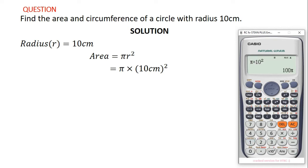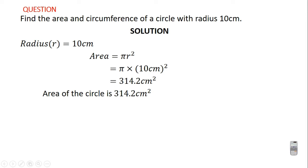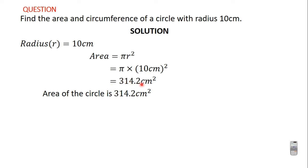That is going to give us 100π. We want our answer in decimals, so press the S to D button and it will convert it for you. We get 314.15, and rounding to one decimal place that gives us 314.2 centimeters squared. So the area of the circle is 314.2 cm².